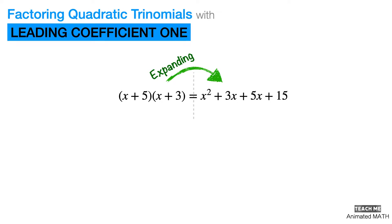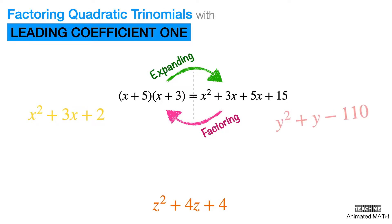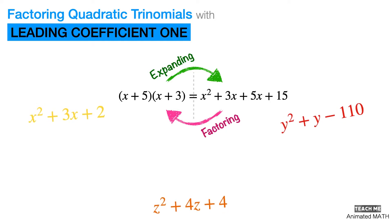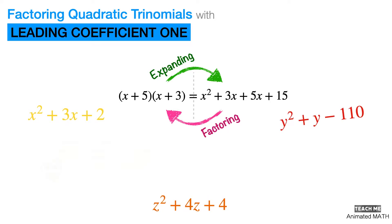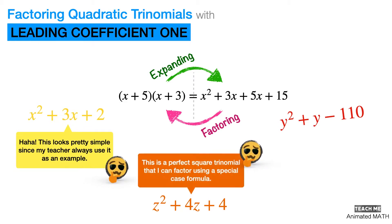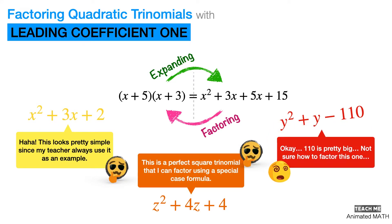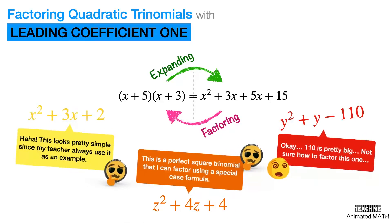To factor a trinomial, you'll have to reverse this process, which is why, if you imagine it already, it can involve a lot of guesswork. And to greatly simplify that process, we will only deal with quadratic trinomials with leading coefficient 1 in this video. Having extensive practice in multiplying polynomials will give you some kind of sixth sense and reduce that guesswork by a huge factor.